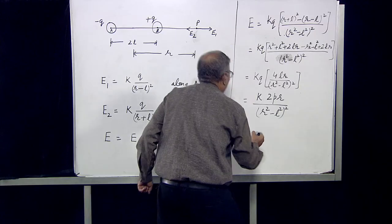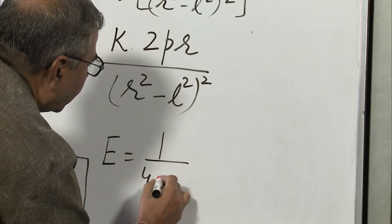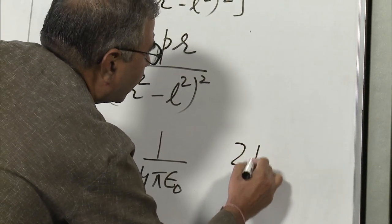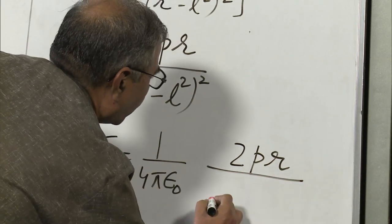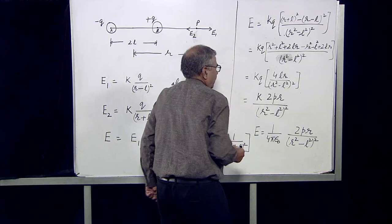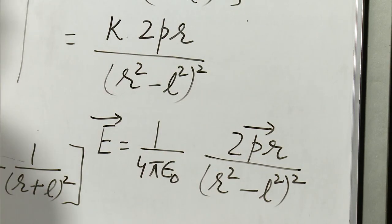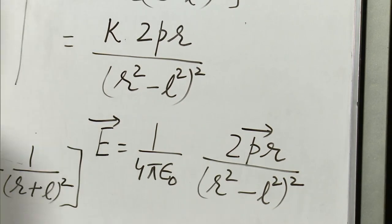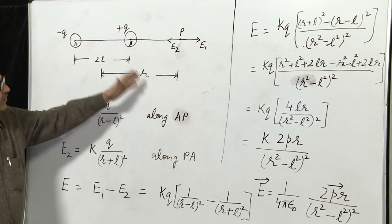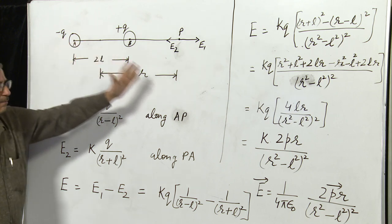Here K is nothing but 1 upon 4 pi epsilon naught. So electric field E will be equal to 1 upon 4 pi epsilon naught times 2PR upon (R squared minus L squared) whole square. Electric field E is a vector quantity and it is directed along the direction of P — from negative charge to positive charge, that is from A to B.